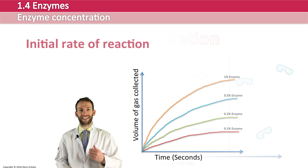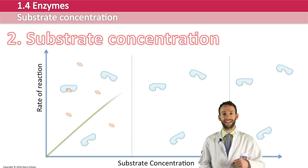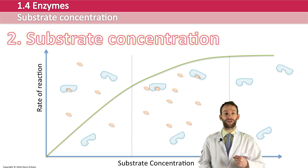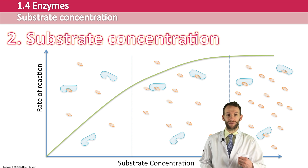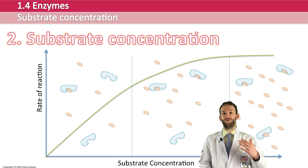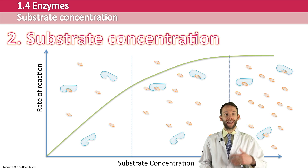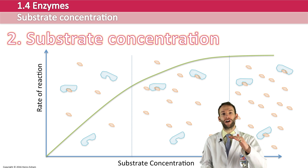The second variable to investigate is substrate concentration. If you increase the substrate concentration, there's going to be more chance of an enzyme colliding with a substrate molecule — more substrate molecules moving around means more chance an enzyme will bump into one. However, there becomes a certain point where the rate stops increasing because it doesn't matter how many more substrate molecules you add — the enzymes are all busy. They're saturated; all their active sites are full and they can't combine with any more substrates any quicker, so the graph levels off and plateaus.